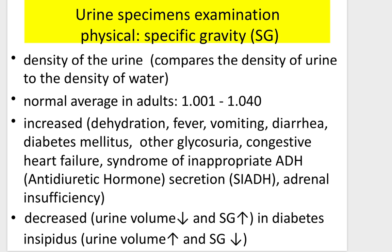Investigation of urine by specific gravity: density of urine compared to density of water. Normal range in adults is 1.001 to 1.040. Increased specific gravity is caused by dehydration, fever, vomiting, diarrhea, diabetes mellitus, glucosuria, congestive heart failure, syndrome of inappropriate antidiuretic hormone secretion, and adrenal insufficiency. In diabetes insipidus: urine volume is increased and specific gravity is decreased. When urine volume decreases, specific gravity increases.